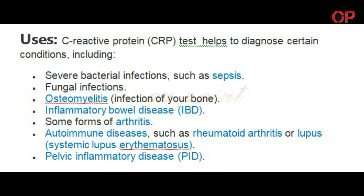Uses: C-reactive protein CRP test helps to diagnose certain conditions including severe bacterial infections such as sepsis, fungal infections, osteomyelitis (infection of your bone), inflammatory bowel disease (IBD), some forms of arthritis, autoimmune diseases such as rheumatoid arthritis or lupus (systemic lupus erythematosus), and pelvic inflammatory disease (PID).